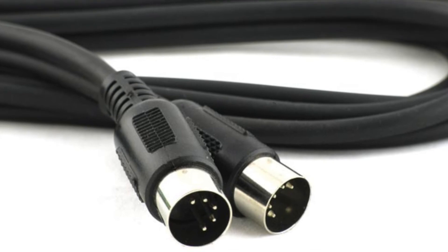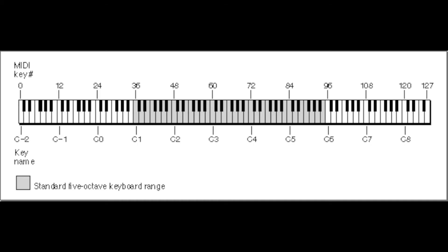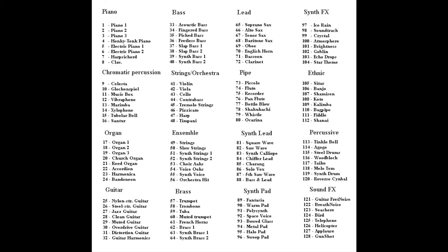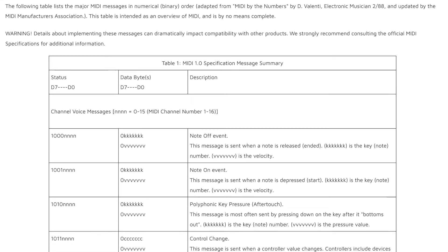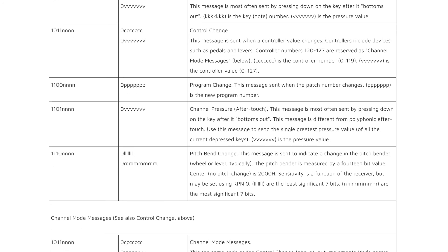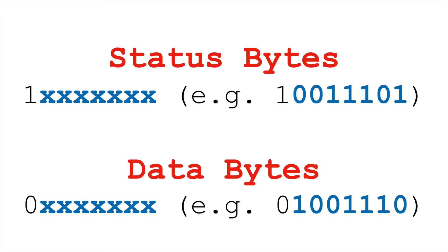If you've done any work in MIDI before, these numbers might be familiar. 0 to 127 is the range of MIDI pitches, the range of MIDI velocities, the range of continuous controller information, and even the number of general MIDI program instruments, though they're numbered 1 to 128. Understanding why our range of values is from 0 to 127 is useful — it's because we can store that range of values in a single byte.